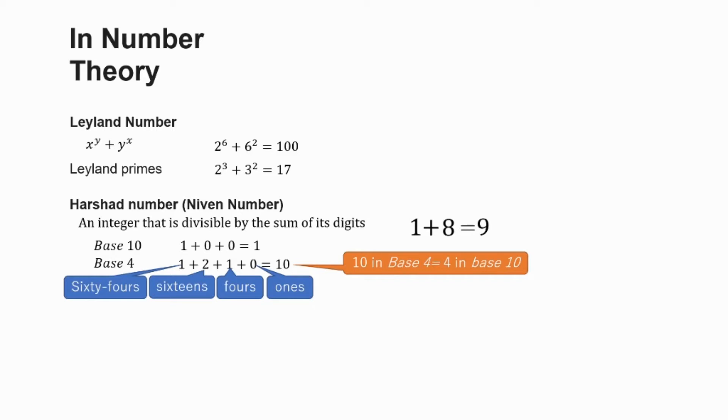But where this gets really interesting is that 100 in base 4 is also a self-descriptive number, and these are some of the coolest numbers out there. A self-descriptive number has two unique characteristics. The first one is that the number of digits is equal to the base. In other words, in base 4, 1 2 1 0 has 4 digits, which is the same as base 4.